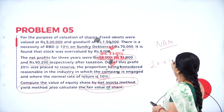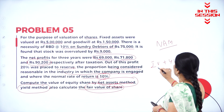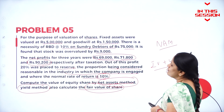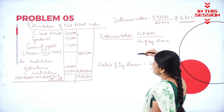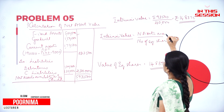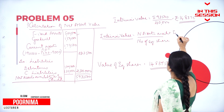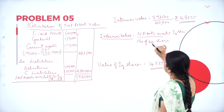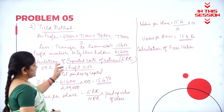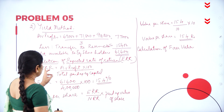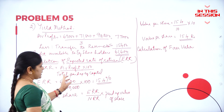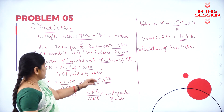The intrinsic value plus the yield value divided by 2, we get the fair value of the share. How do we find the intrinsic value? The net assets available to equity shareholders divided by number of equity shares. We have to calculate the ERR. Calculation of expected rate of return: ERR equals average profit into 100 divided by total paid-up equity capital.